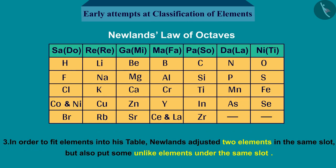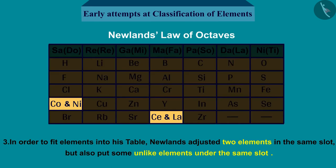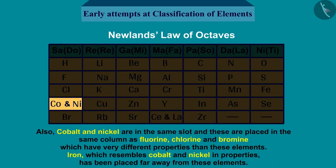Third, in order to fit elements into his table, Newlands adjusted two elements in the same slot, and also put some unlike elements under the same slot. Fourth, Cobalt and Nickel are placed in the same column as Fluorine, Chlorine, and Bromine, which have very different properties from these elements.